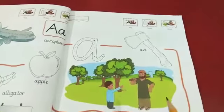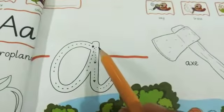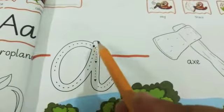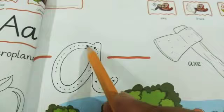Now we will trace the sound of A. Put your pencil on the starting point and move your pencil anti-clockwise.